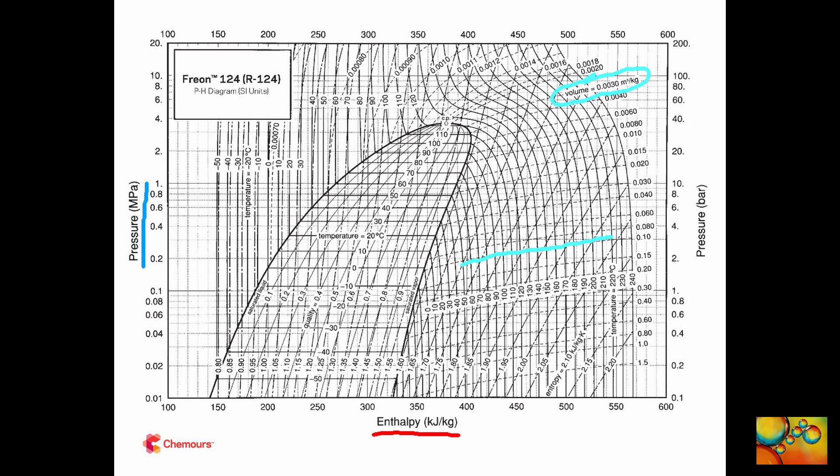Let's now follow the line of an isochoric process — that is, a process that happens at constant specific volume. On the upper right hand side of the diagram, there is a hint: volume equal to 0.003 cubic meter per kilogram, indicating that lines of similar shape will have constant specific volume. Let's follow the line of 0.003 cubic meter per kilogram.